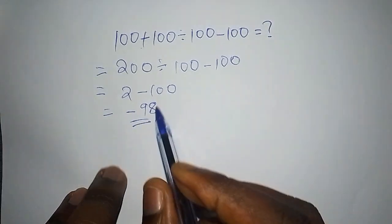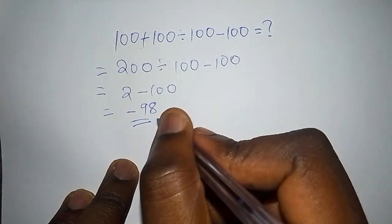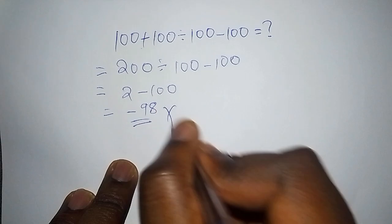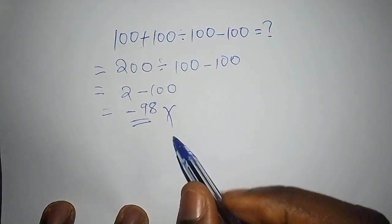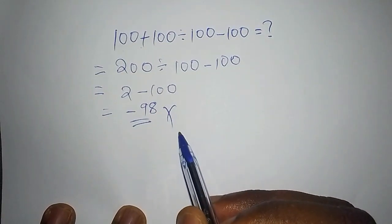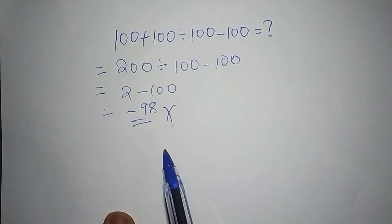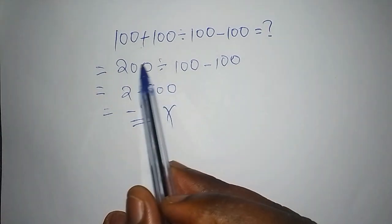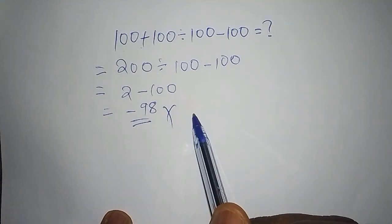And when we get minus 98, meaning that this answer is wrong. There was an incorrect method that was followed in working it out. I want to take you the best method that you can use it to work it out step by step within a second.